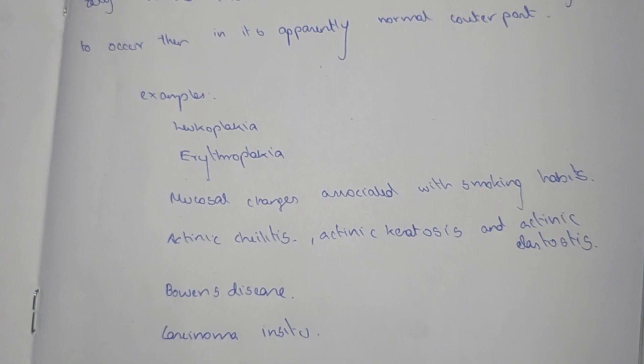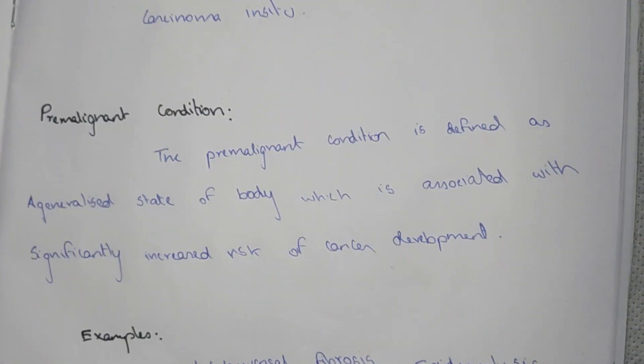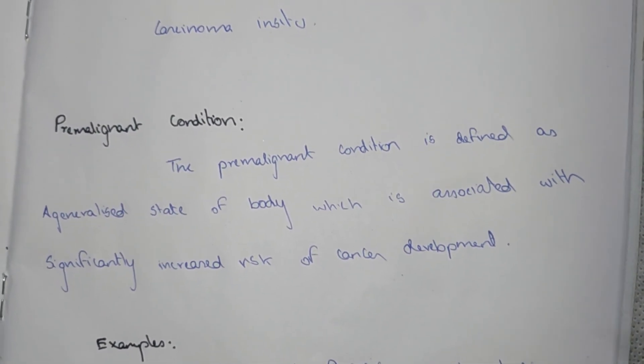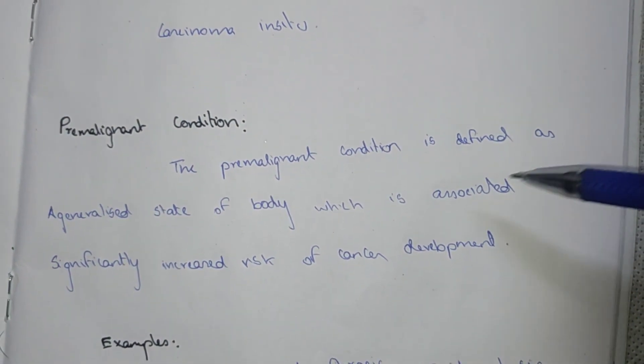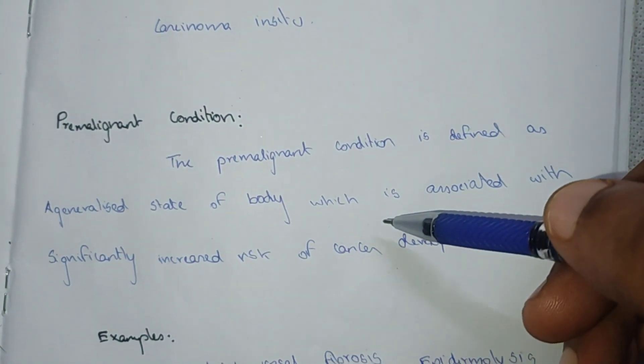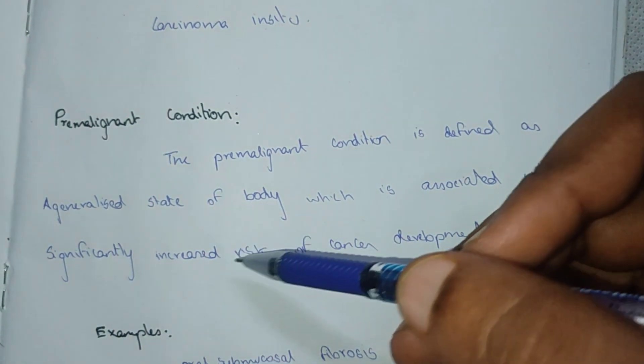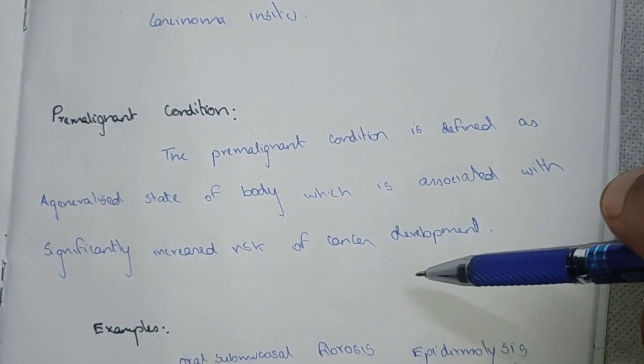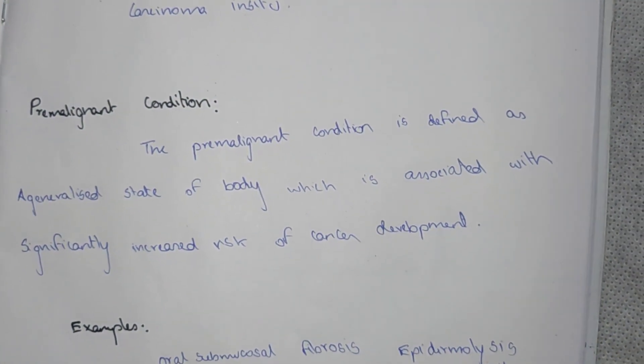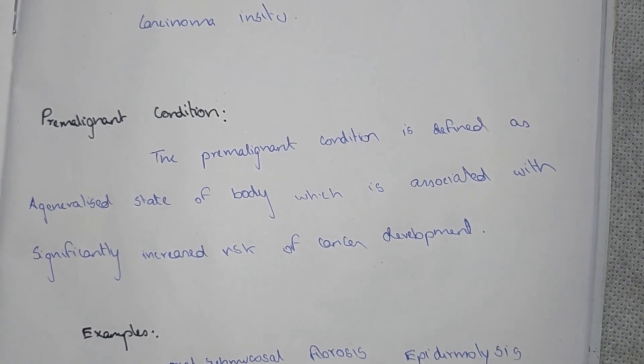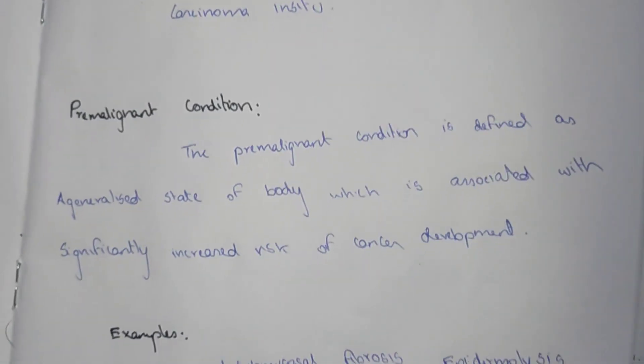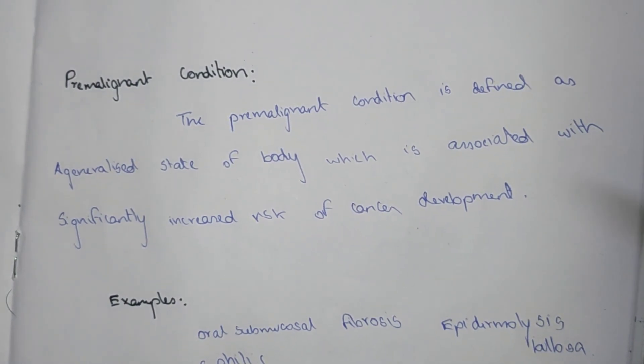Pre-malignant conditions are defined as a generalized state of the body which is associated with significantly increased risk of cancer development. These are conditions where the risk of cancer development is higher.